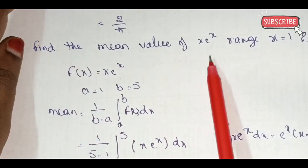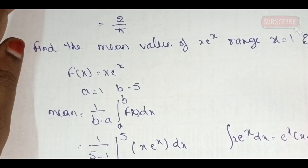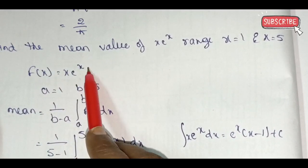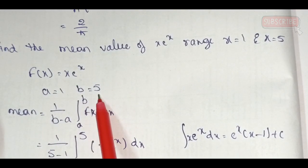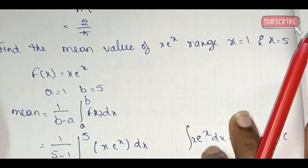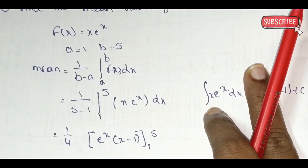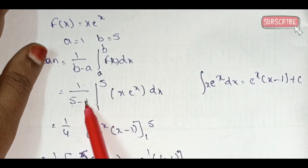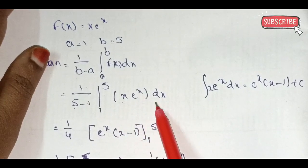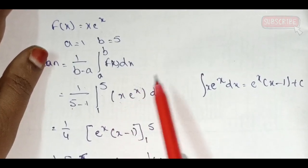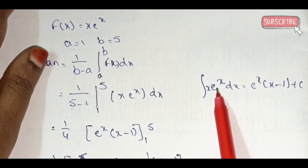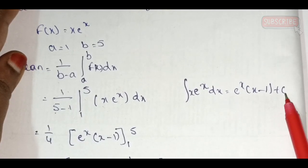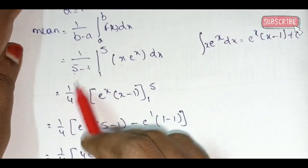Find the mean value of f(x) = x·eˣ in the range x = 1 to x = 5. Mean value formula: 1 by (b minus a), integral from a to b of f(x) dx. With b = 5 and a = 1: 1/4 × integral from 1 to 5 of x·eˣ dx. Integration of x·eˣ dx = eˣ(x − 1) + C.